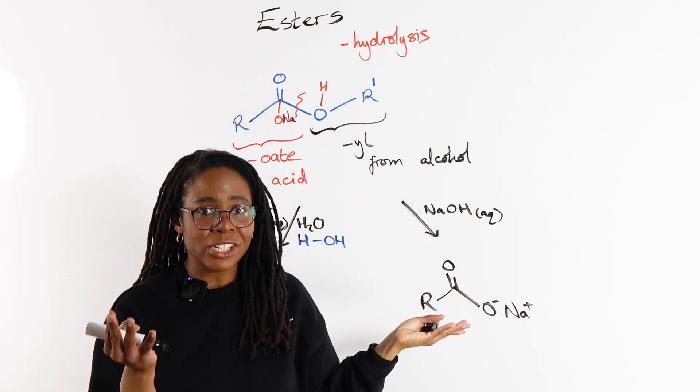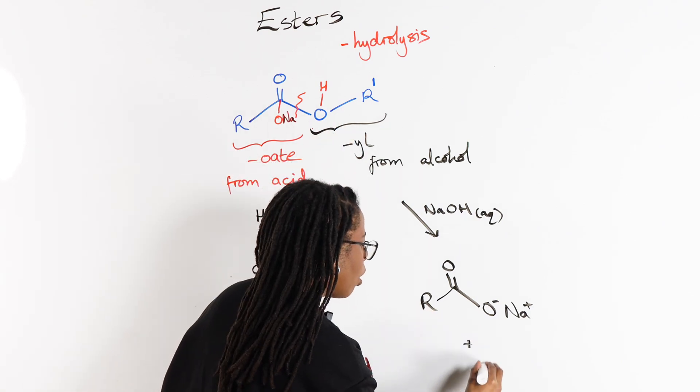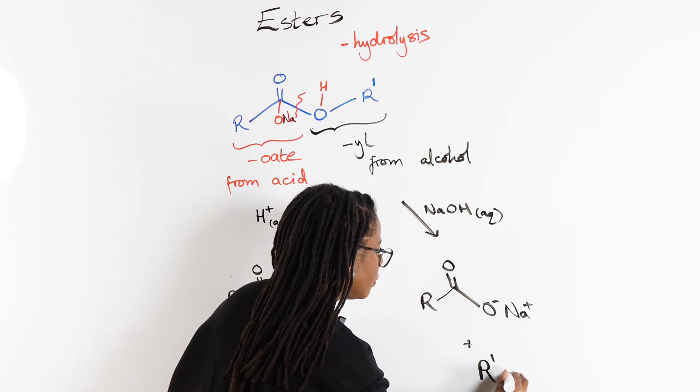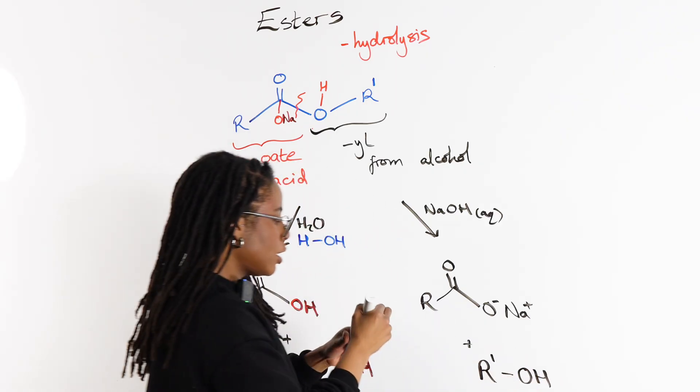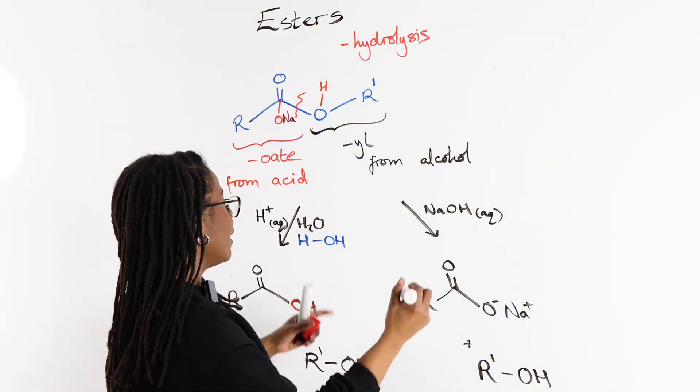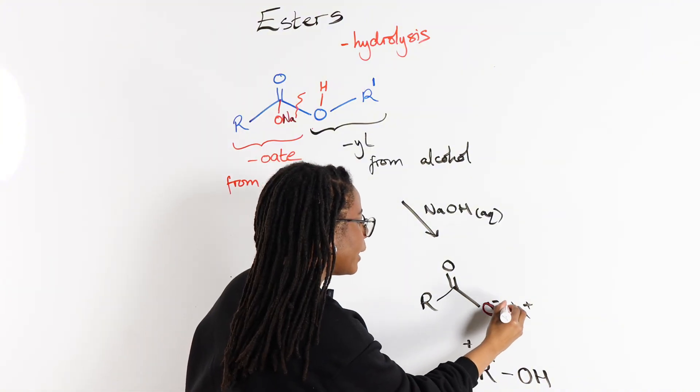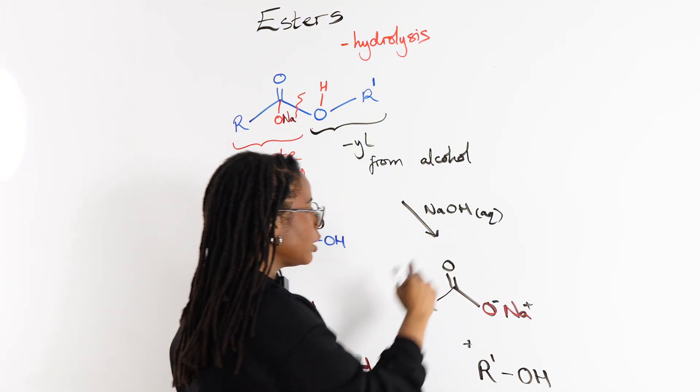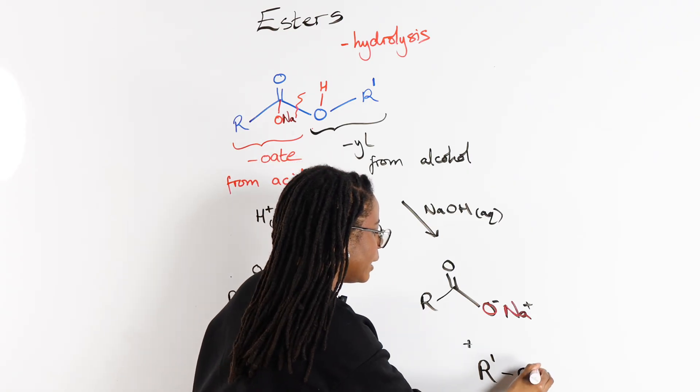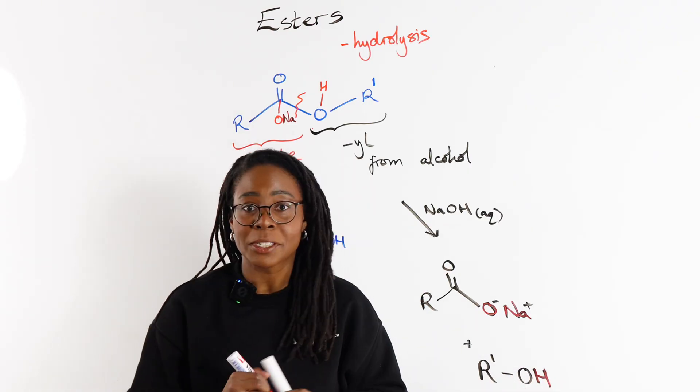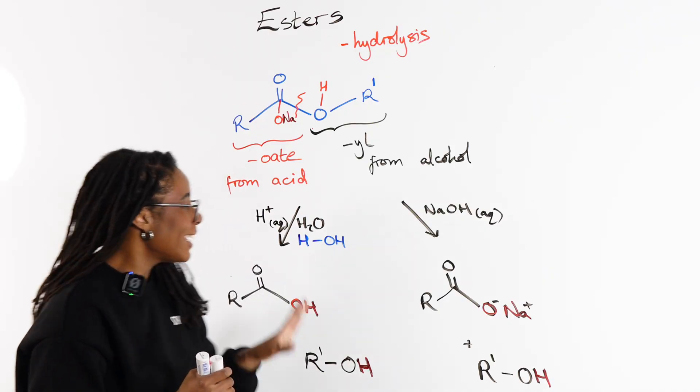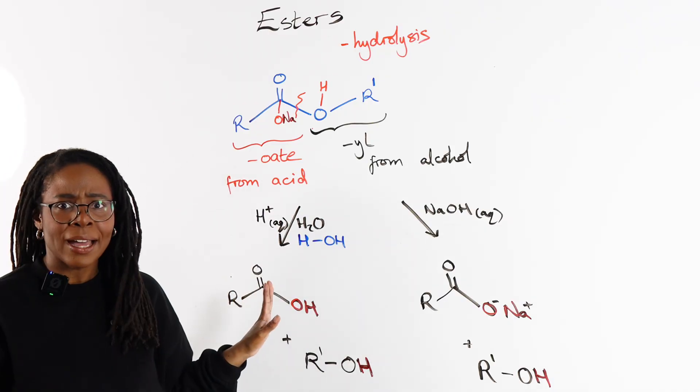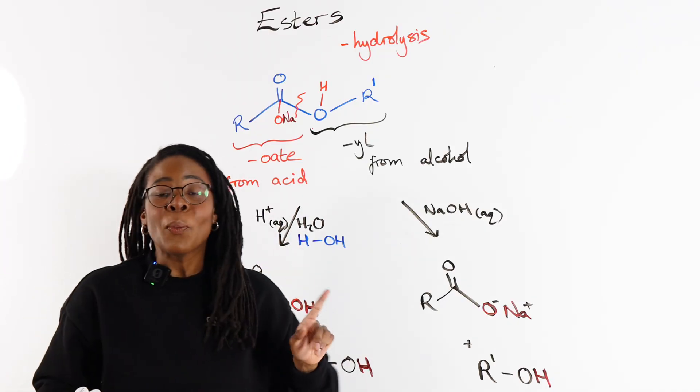Instead, we're going to have an ONa—we can also write this as O- Na+. This is essentially a salt, sodium carboxylate depending on what this R group is. And then the alcohol doesn't change; it's still just going to be ROH, just as before.